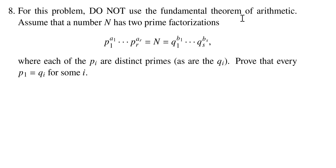Here we're going to assume that some number has two different prime factorizations — well, possibly different. We have two prime factorizations for this number n. These p's and q's are distinct primes; that is, the p's are distinct from each other and the q's are distinct from each other. One of the goals is to show not just the existence of prime factorizations, but the uniqueness of prime factorizations.